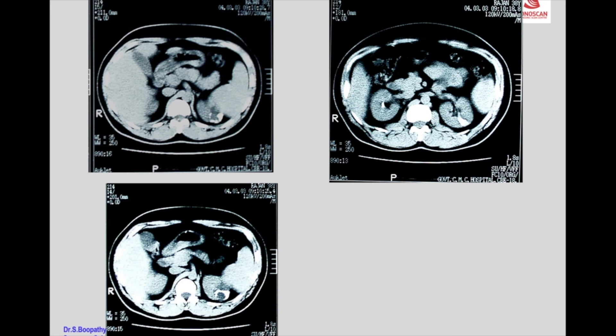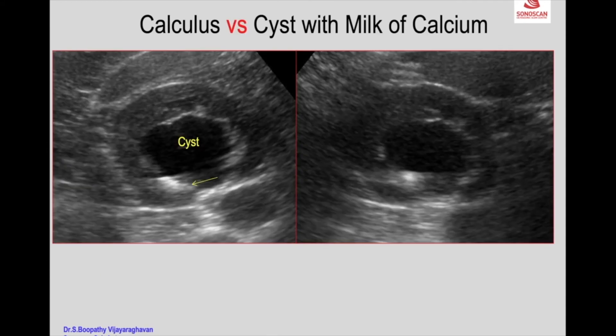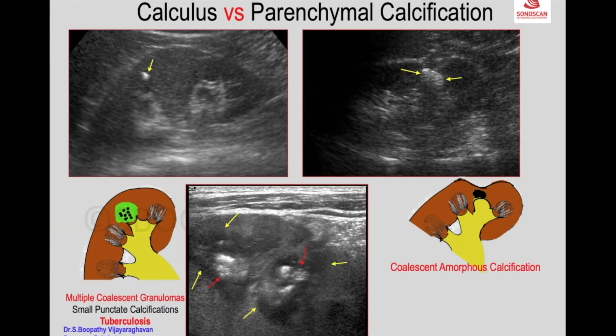This is the calcification, and that is the CT scan done after the IVP, reported as a calcified mass. But the cyst with calcification in axial scan supine, versus axial scan in prone, also shows a mass of calcification.